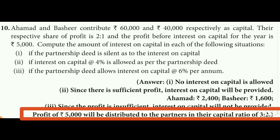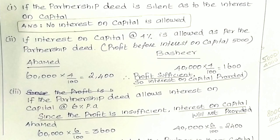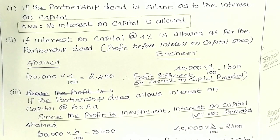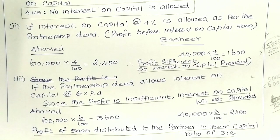Instead, the profit of 5,000 will be shared based on the capital ratio. Capital is 60,000 and 40,000, giving a ratio of 3 is to 2. So the profit of 5,000 will be distributed to the partners in the capital ratio of 3 to 2. This is the scenario. Thank you.